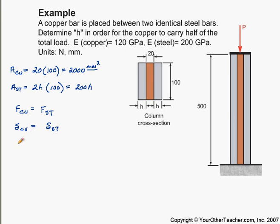So the displacement in the copper is equal to the force in the copper times the length divided by E of copper and area of copper. And do the same thing for the steel. The force in the steel times the length divided by E of steel and area of steel.